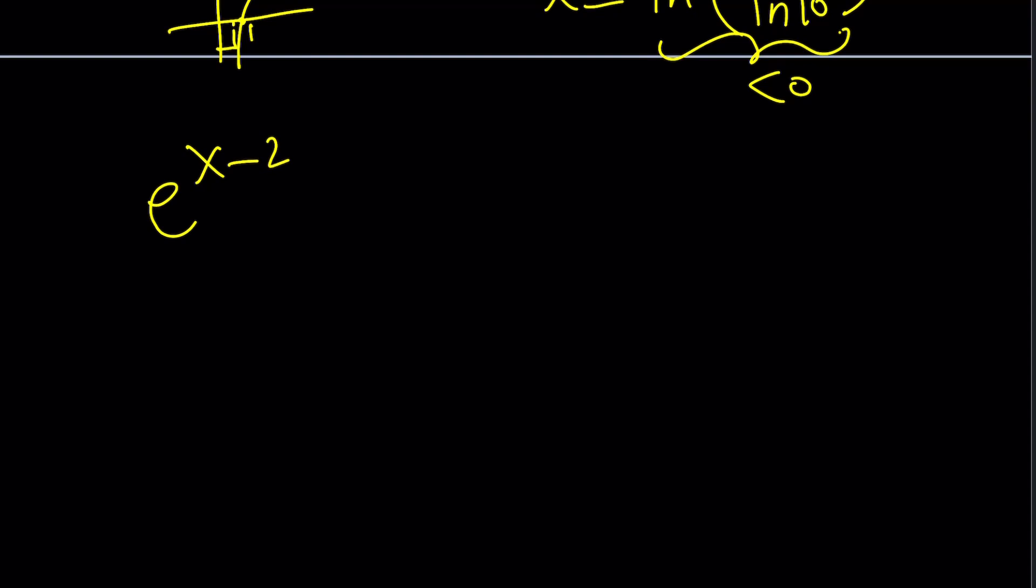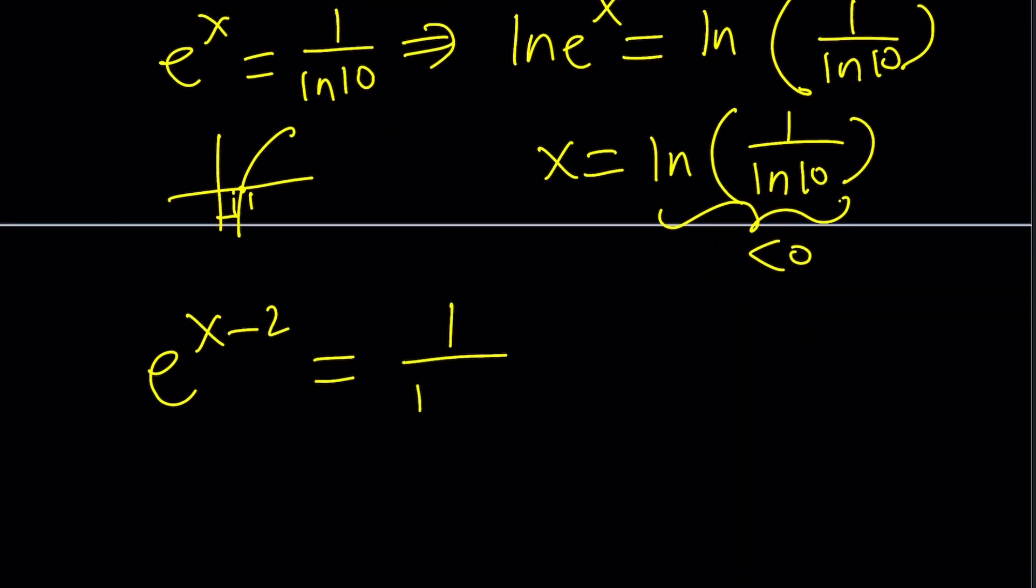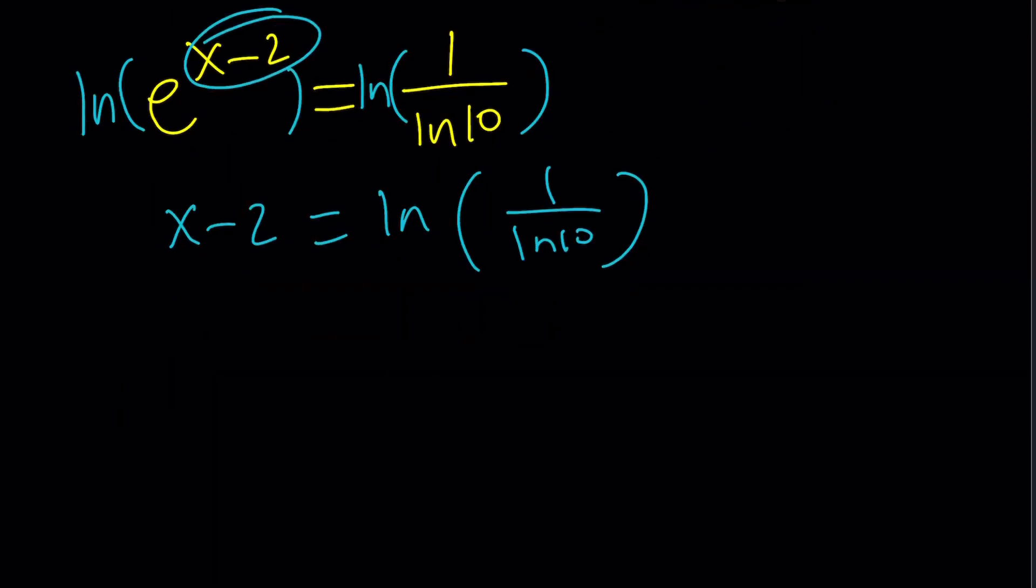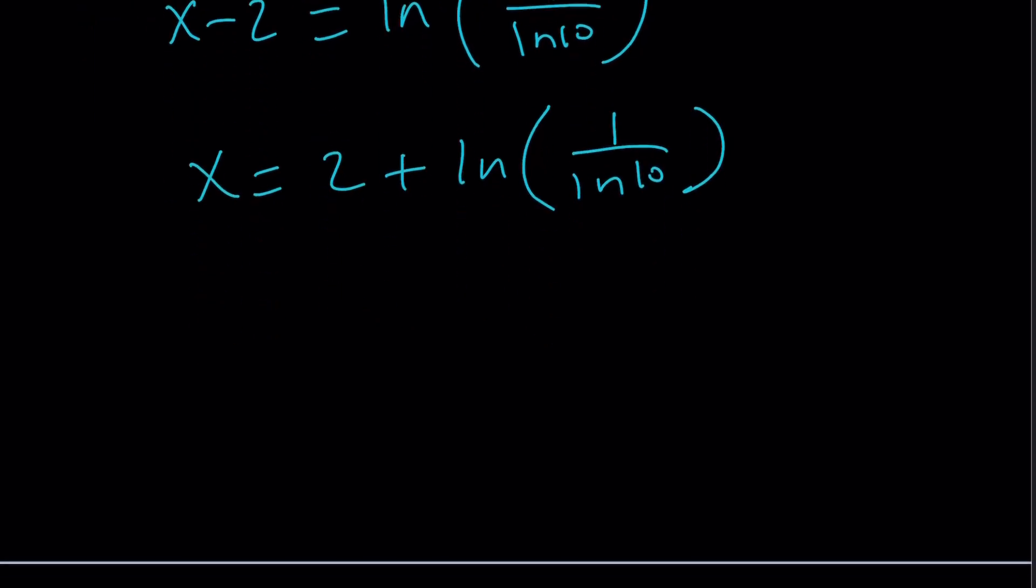e to the power of x minus 2 is equal to 1 over ln 10. Now, we're going to go ahead and ln both sides. It's ln both sides. And now we're going to get this. x minus 2 equals ln 1 over ln 10. And if you add 2 to both sides, you're going to get the answer. We're going to look at the graph at the end so you can see the numerical value on the graph.